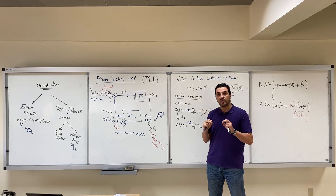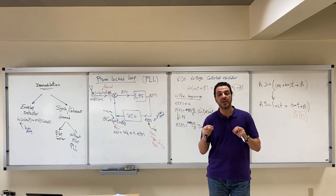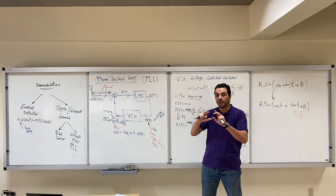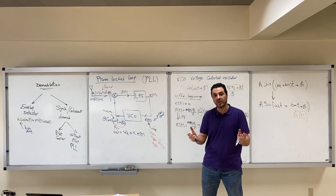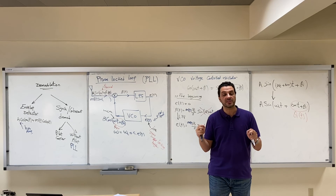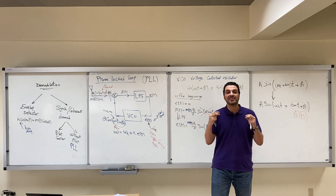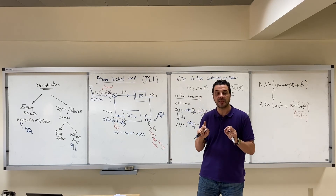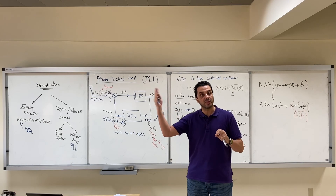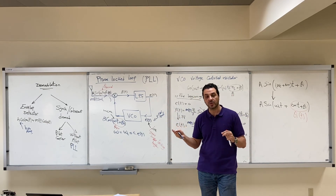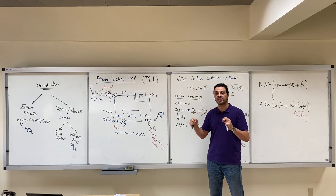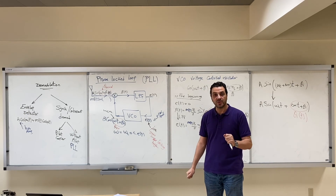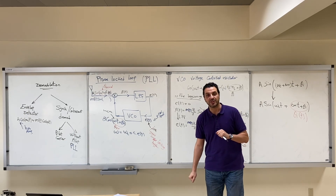In the next few videos, we will study two methods where the phase-locked loop is used within larger circuits. The first method is called the squaring method, and the second is called the Costas loop. These two methods are examples of synchronous or coherent detectors used specifically for DSB-SC. For single sideband and vestigial sideband, other synchronous demodulators are used, but we will focus on these two examples applicable to DSB-SC. See you in the next video with the squaring method.